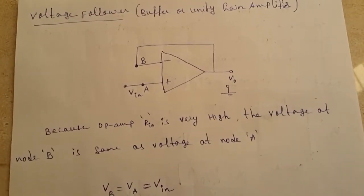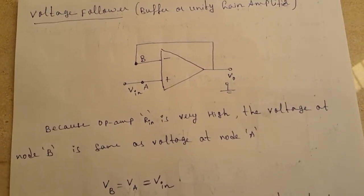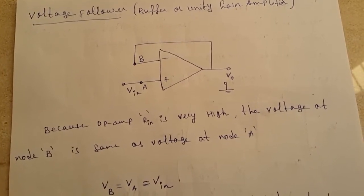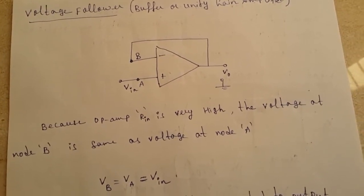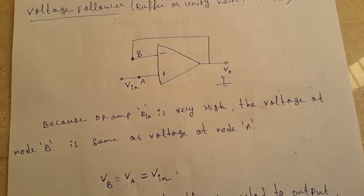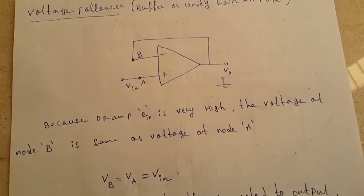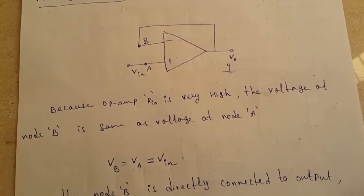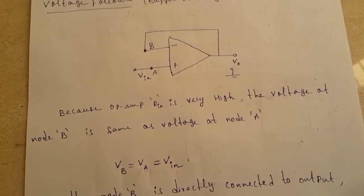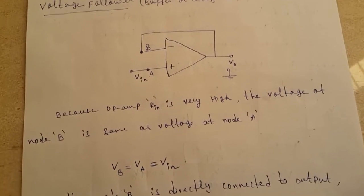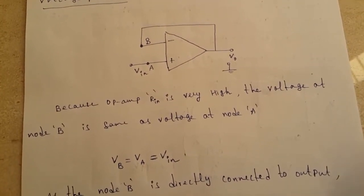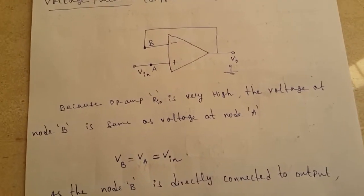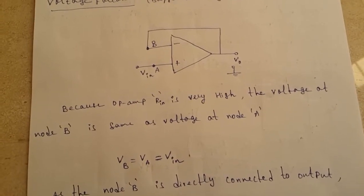In this video we will discuss the voltage follower, which is also known as a buffer or unity gain amplifier. We are using an op-amp as a unity gain amplifier. The advantages of the unity gain amplifier are high input impedance and low output impedance.